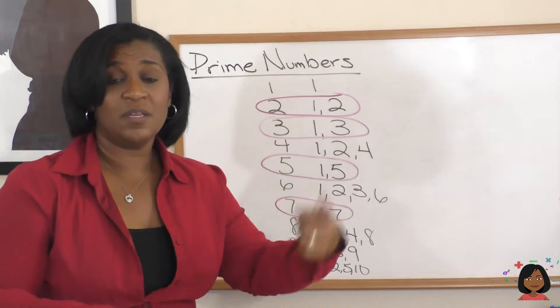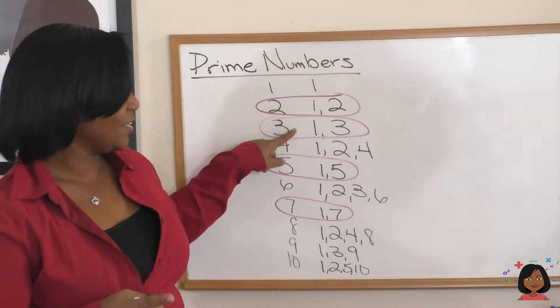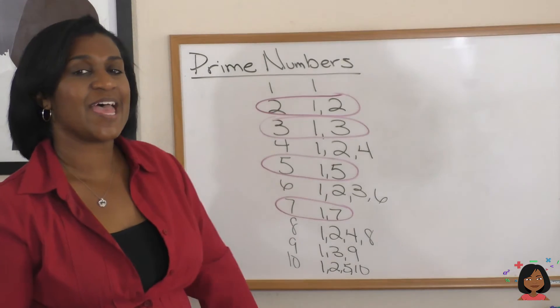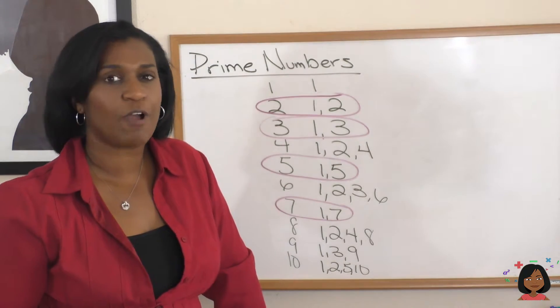1, that is the number 1, and the other one is that number. So, let's continue past this 10. Give me the next few prime numbers.